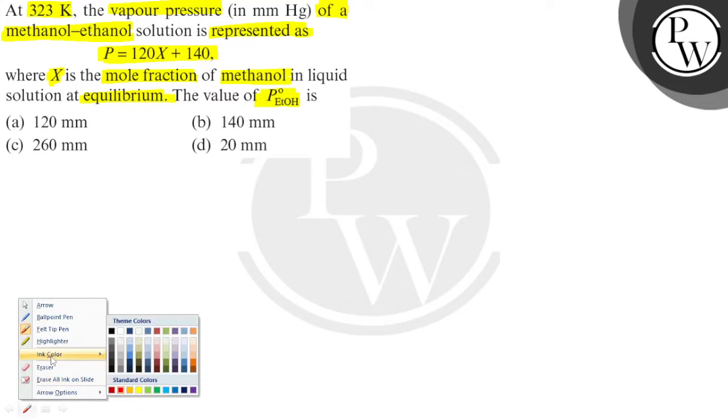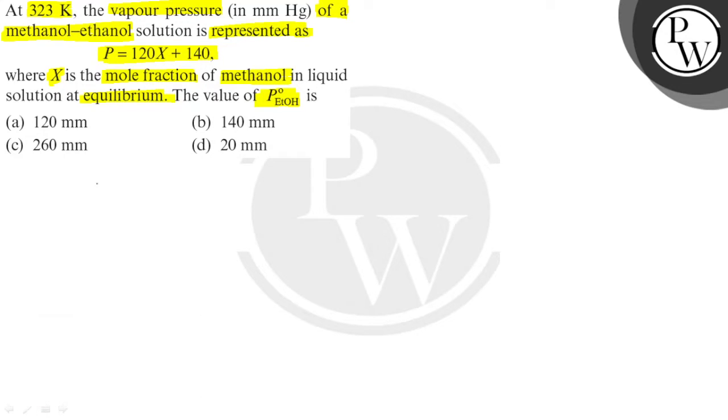So let's understand the question. If methanol and ethanol are both present, then methanol's mole fraction is x and ethanol's mole fraction is 1-x. Ethanol's pressure is P0-e, and methanol's pressure is P0-m.